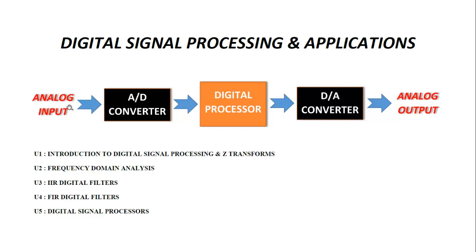In nature, we have only analog input. So converting it into digital, then giving it to the digital processor, you will get the digital output. Then using a digital-to-analog converter to convert the signal into analog output so that humans can again understand. This is the complete block diagram — how analog signal is converted into digital, then from digital again to analog, and what is the necessity of converting a digital signal back to analog.